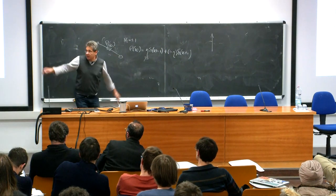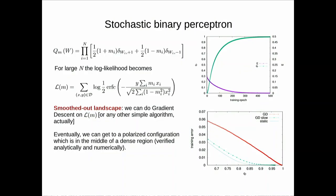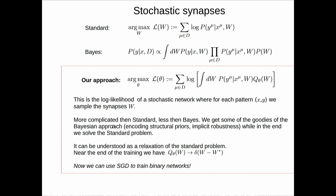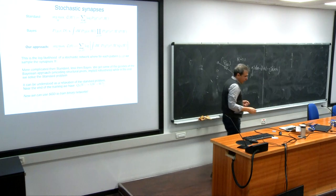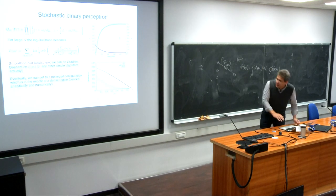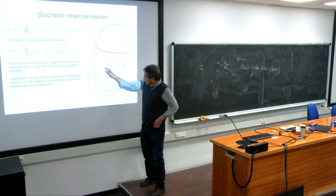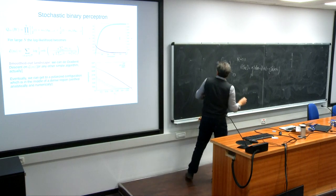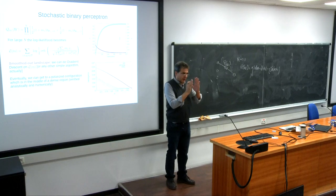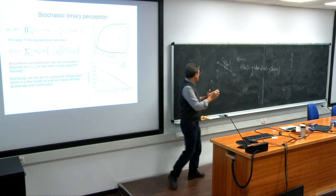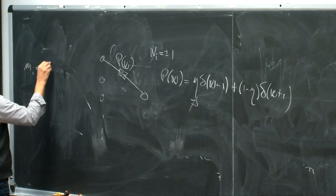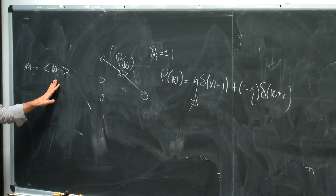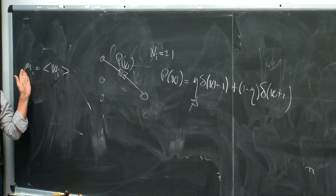We parameterize the weights with one real number characterizing the probability distribution. What is good about this is that you now have a discrete system on which you can use any gradient descent algorithm, because what you're actually learning is the probability distribution. The key point is that when you do this analytically, you can keep under control the magnetization of the weights — the bias. Let mi equal the expected value of wi.